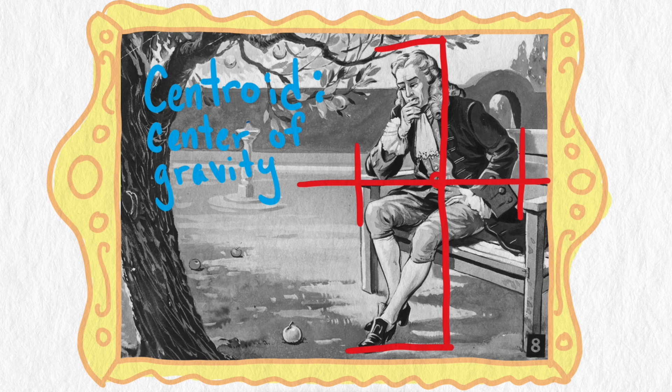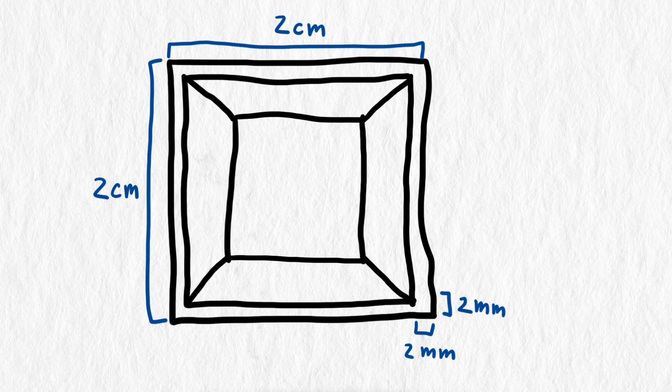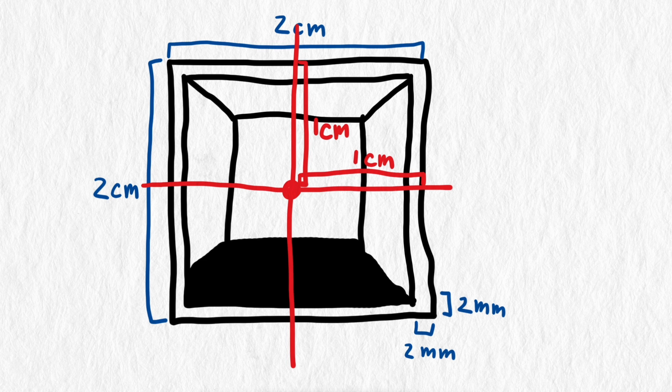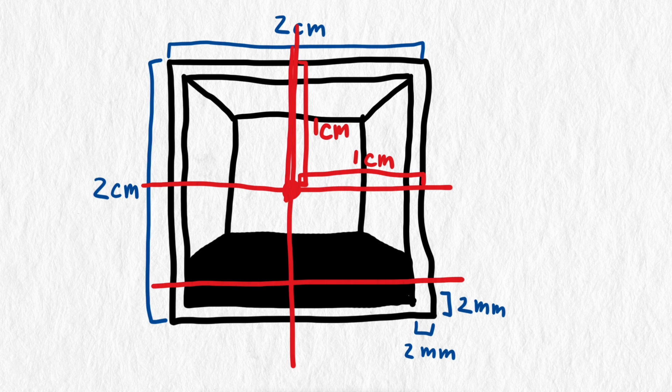Centers of gravity always lie on lines of symmetry, assuming the object has constant density. This makes it easy to find the center of gravity of the shell. It has to be in the center of the shell, one centimeter in from each side. We could find the center of gravity of the filling also. It would be one centimeter in from the sides, and halfway up from the inside of the shell to the top of the filling.